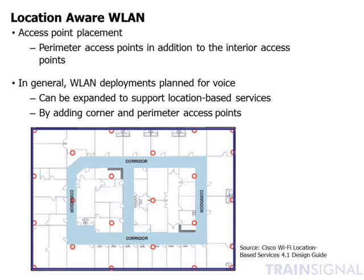That means an access point in every corner and along the walls. If a site already has wireless LAN deployed, you can often enable location awareness by adding access points around the perimeter. The one issue I've run into is when access points have been deployed straight down the middle of a building or corridor — in that case, you can't see three or four access points from any one location, and the access points need to be moved to the perimeters and corners.